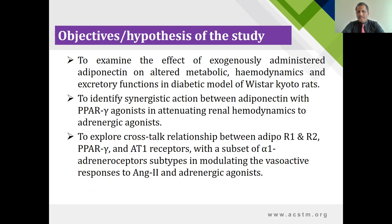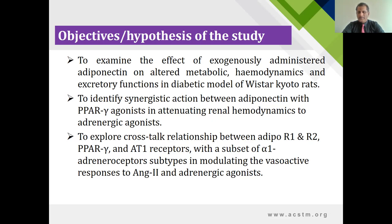The objective of the study is to examine the effect of exogenously administered adiponectin as an insulin-sensitizing hormone on the metabolic, renal hemodynamic, and excretory functions in the diabetic model of Wistar rats. The second objective was to identify the synergistic action between adiponectin and the PPAR-gamma agonist in attenuating the renal hemodynamics response to adrenergic agonists. The last objective was to explore the crosstalk relationship between adiponectin receptor-1, adiponectin receptor-2, PPAR-gamma, and AT1 receptors with a subset of alpha-adrenoceptor subtypes in moderating the vasoactive responses to angiotensin-2 and adrenergic agonists.